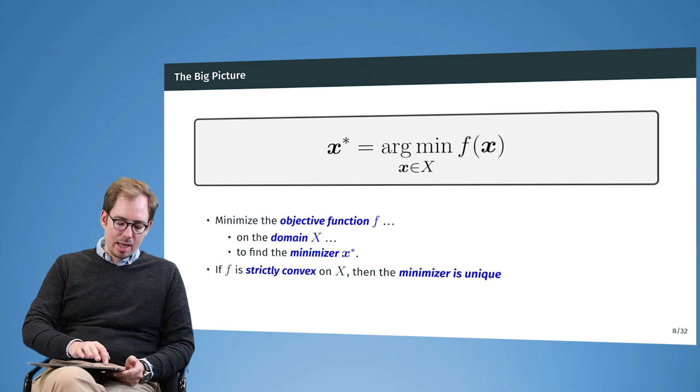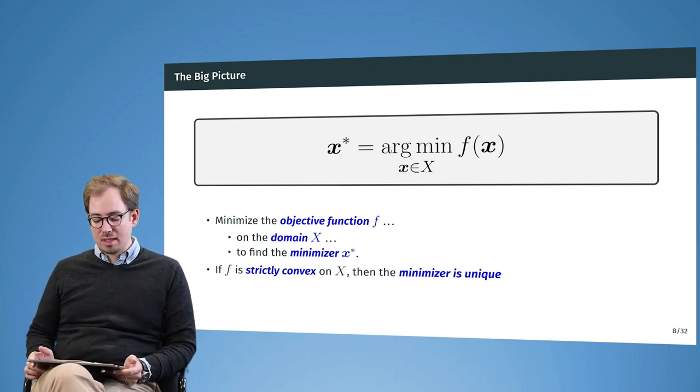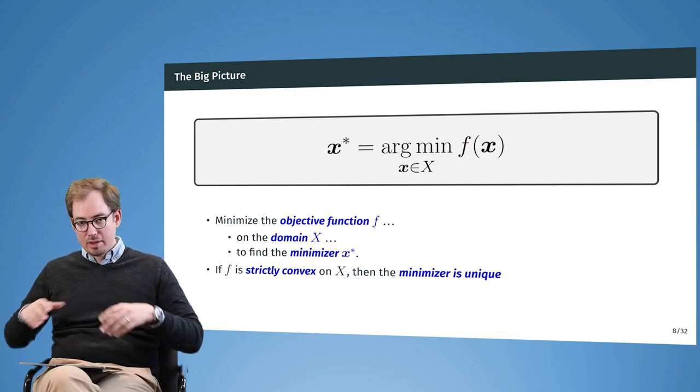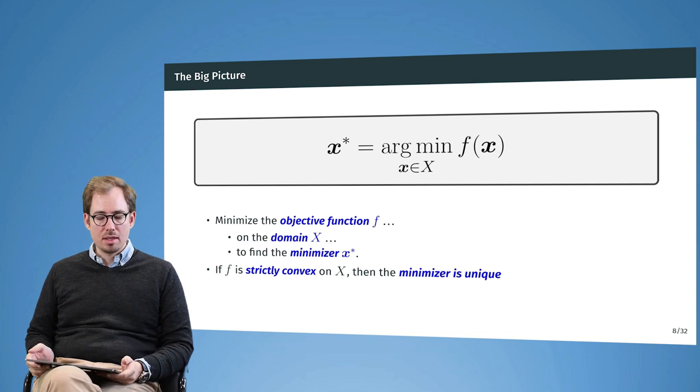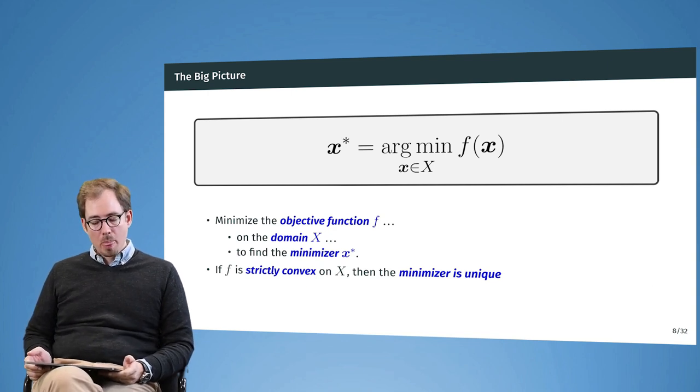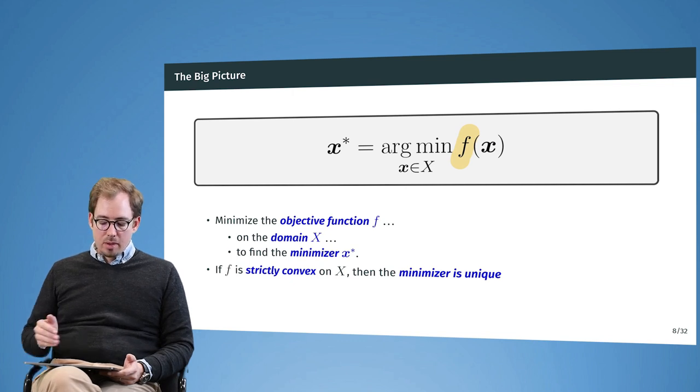Now let's have a look at the very big picture of what we will see in this course. This slide contains basically the entire course, everything that we will see in the coming lectures. What we are interested in is to optimize a certain objective function. Here, this is called f of x. The optimization, we can cast it as a minimization or as a maximization. The two are equivalent because you can take just the negative of a function to switch from a minimization to a maximization.